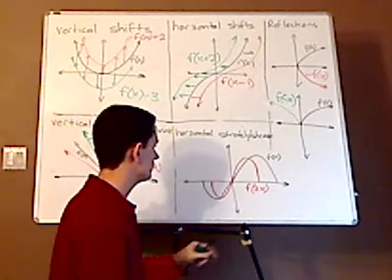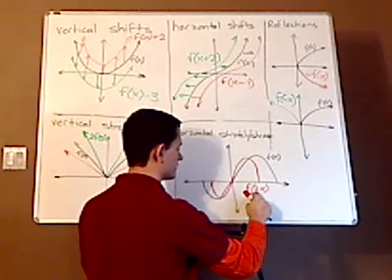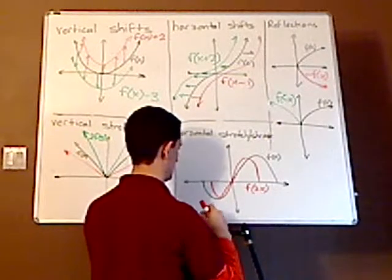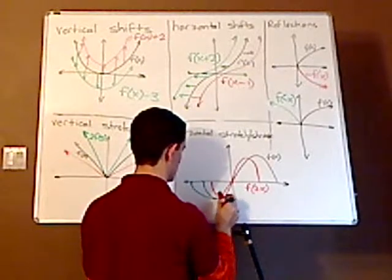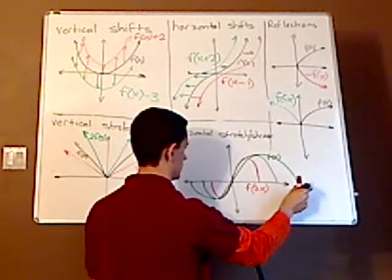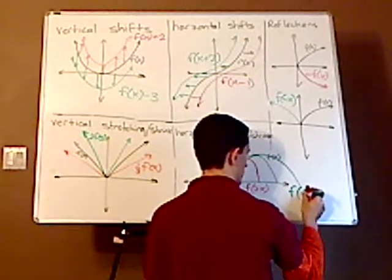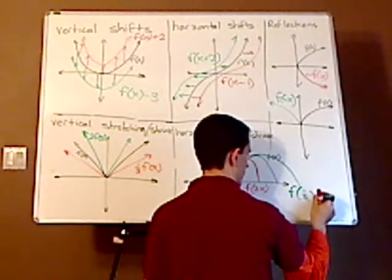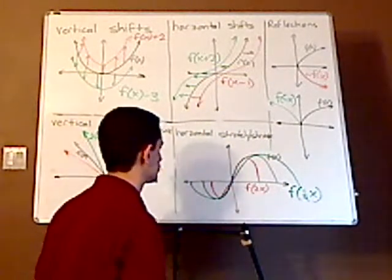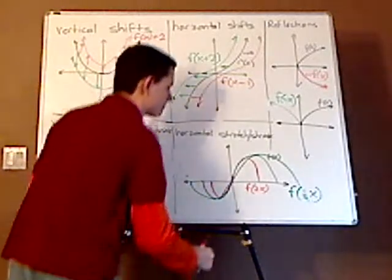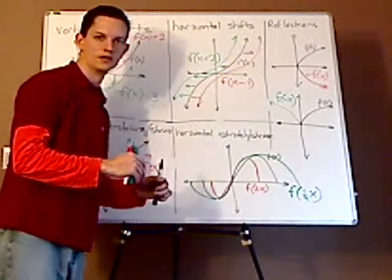Now, remember it has to compensate. If this is a fraction, it's actually going to end up being wider, like that. So that would be f of one-fourth x. And so that's stretching it out. That would be like one-fourth, that would be between 0 and 1.